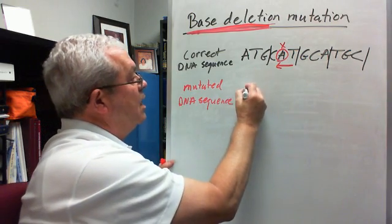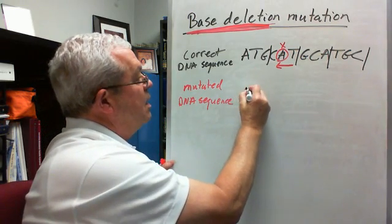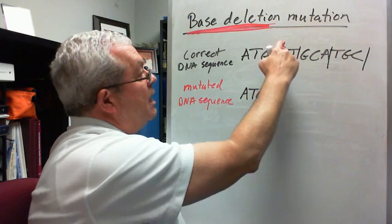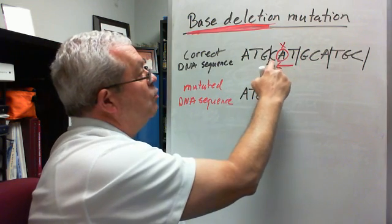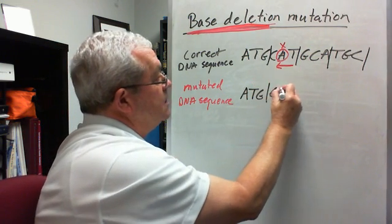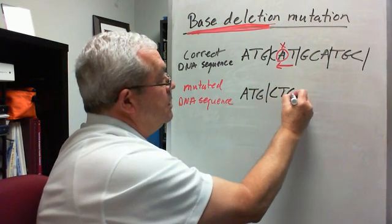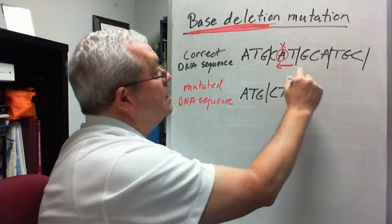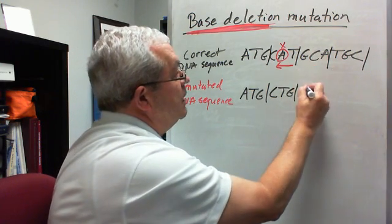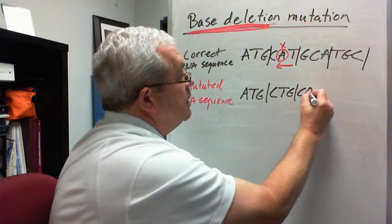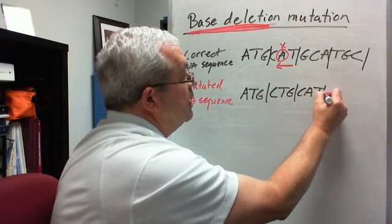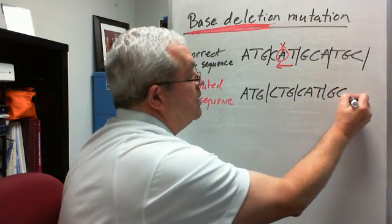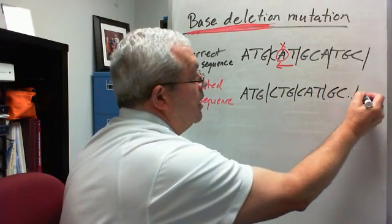Well, the first codon is the same: ATG. The second one, with that A dropped out, will be CTG. The next one will be CAT. The next one will be GC something, etc.